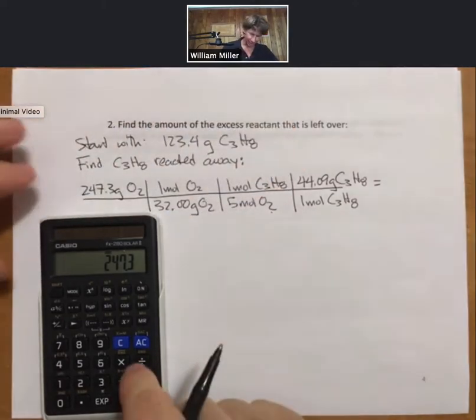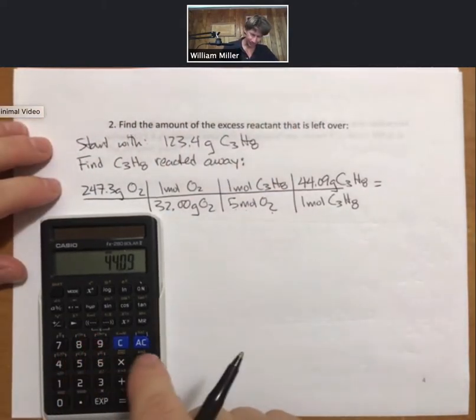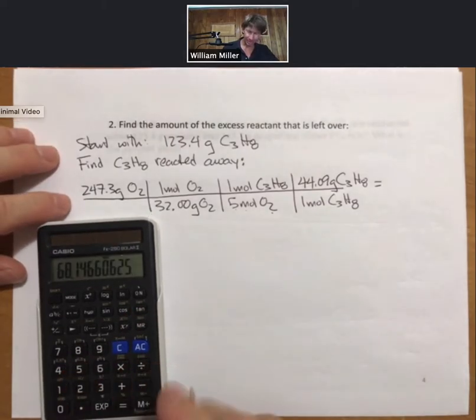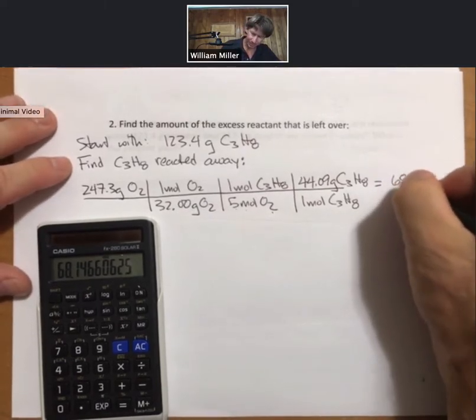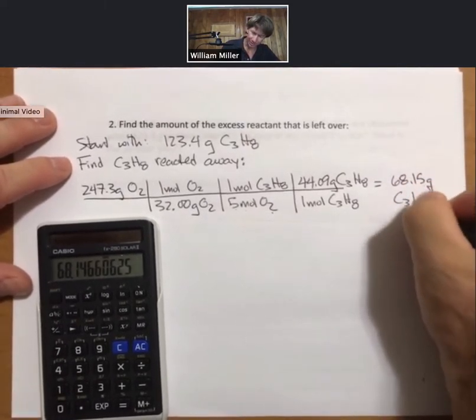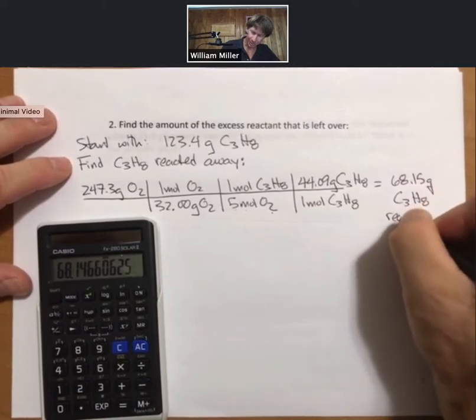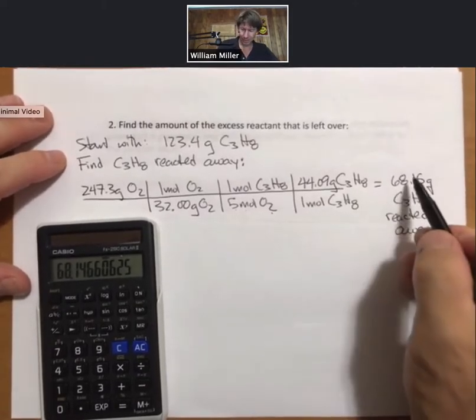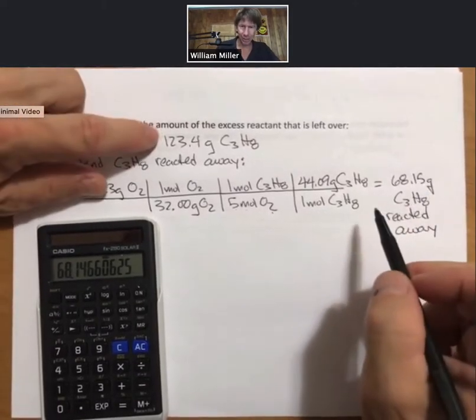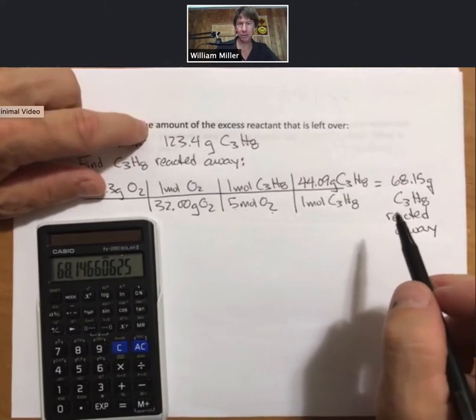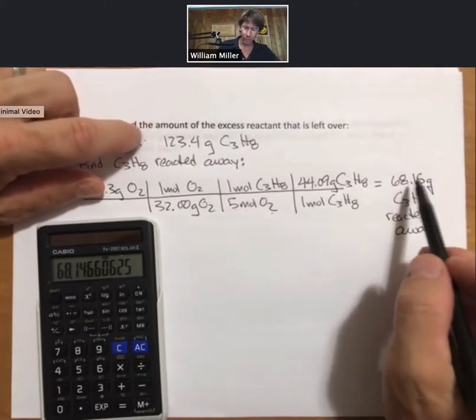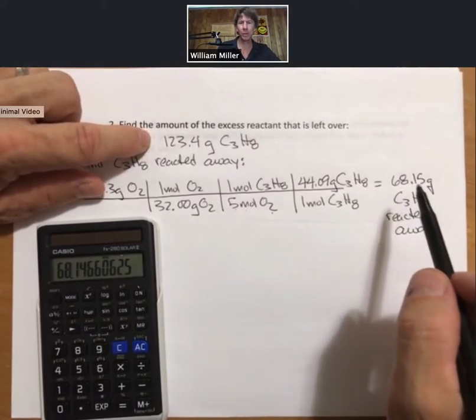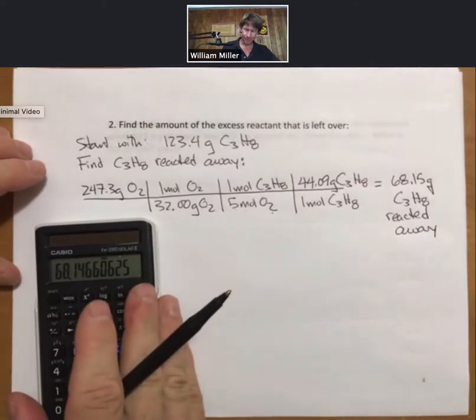Times 44.09 divided by 32, divided by 5: 68.15 grams of propane reacted away. Clearly, this number needs to be less than the amount we started with if our calculations are going to work. And so, if this number were a bit larger than 123.4, it would suggest that we need to revisit our calculations.